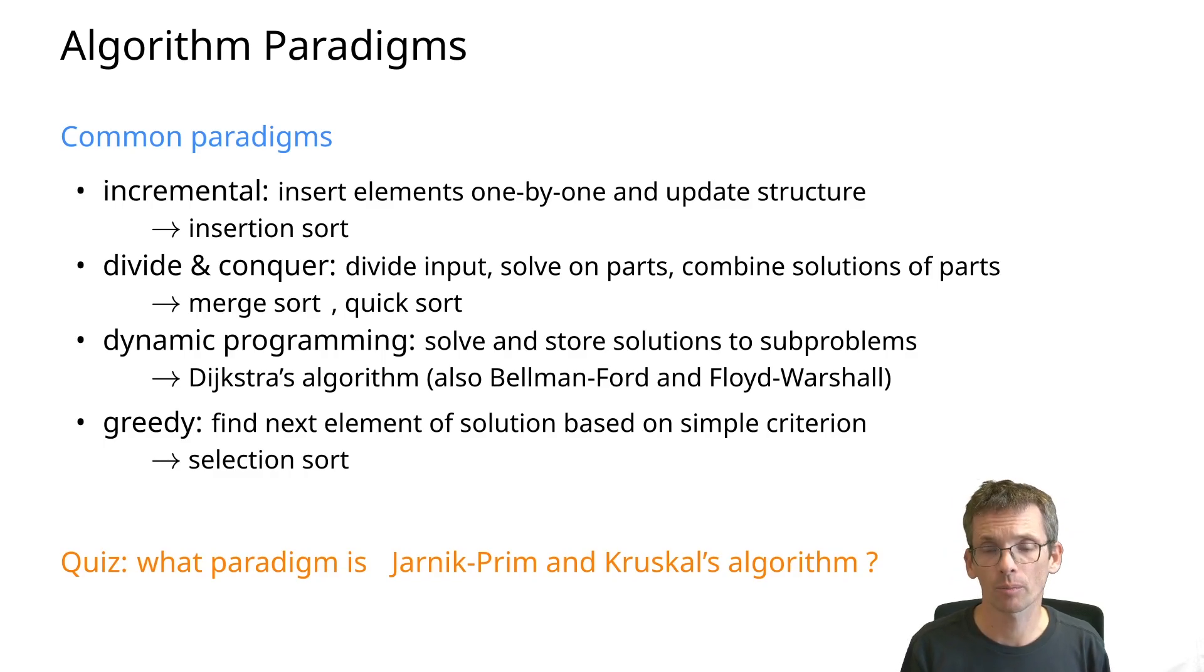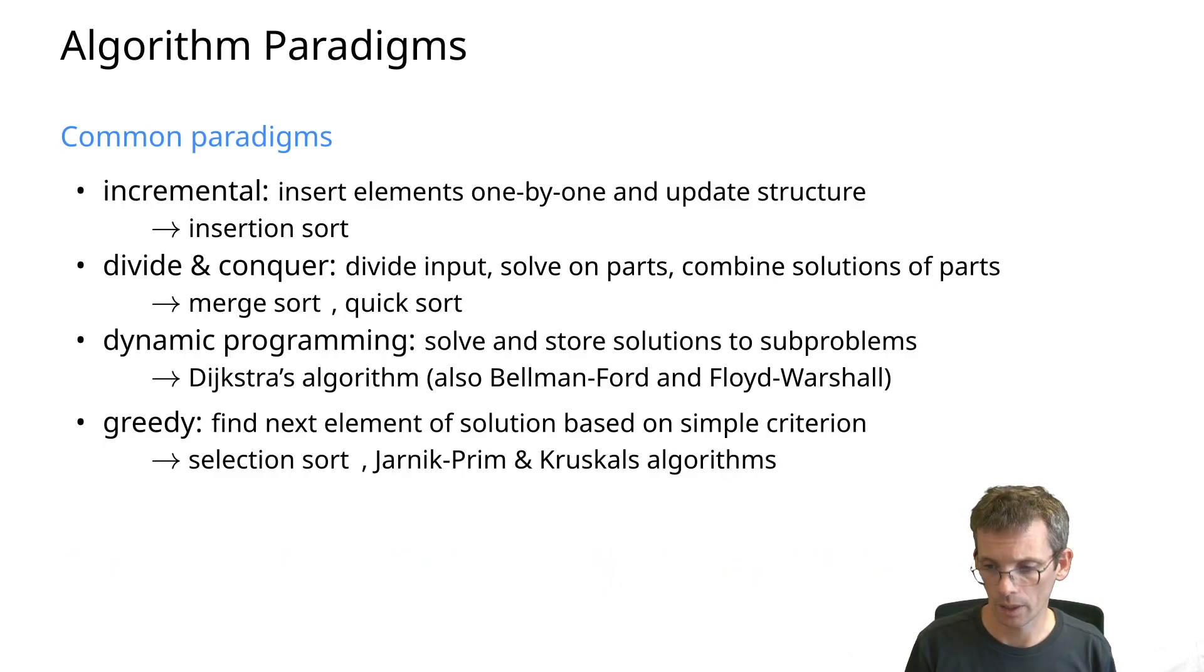Prim, or Jarnik-Prim, or Jarnik-Prim-Dijkstra, and Kruskal's algorithm - both algorithms for finding minimum spanning trees. Those are greedy algorithms. So far, so good. Let's look at graphs and graph algorithms.